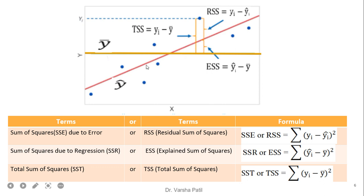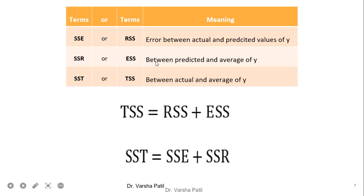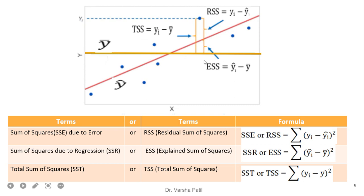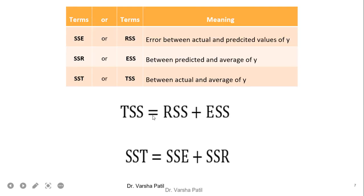If we draw the regression line, we are getting a somewhat better answer, and that is nothing but ESS — the difference between Y-dash and Y-cap. And this is the error of our prediction model. From this, it is very clear that TSS is equal to RSS plus ESS, or in different terms, SST is equal to SSE plus SSR. TSS is the complete term, and this is RSS and ESS. So TSS equals RSS plus ESS.